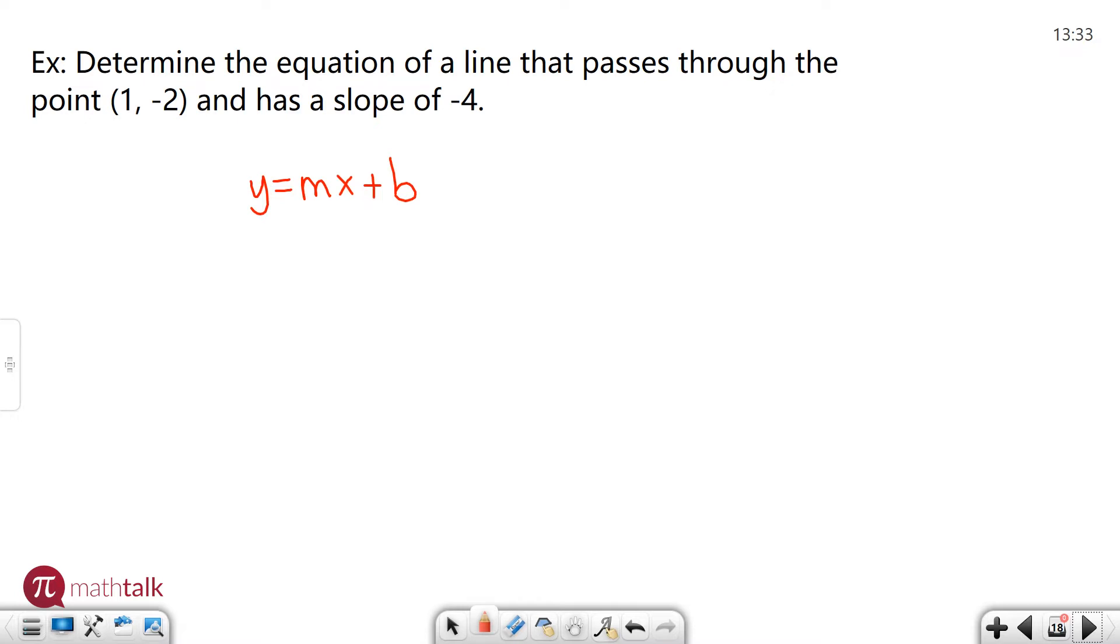Slope I know is negative four because they tell us that. The x value is the x coordinate of my point, and then the y value is there. So I have three of the four values of my equation which means I can use that to solve for the last one which is b.